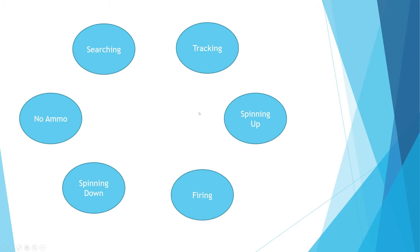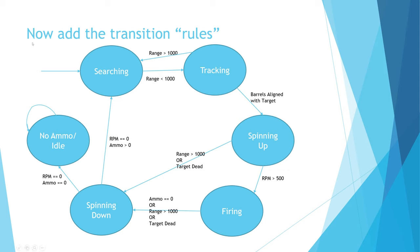We're going to write those down, put them in circles. It doesn't matter the order, but I've done them in the order of how the gun might operate: searching, tracking, spinning up, firing, spinning down, and out of ammo. So we have our states drawn up in circles. The next step is to think about the transitions. When the gun comes into existence in the game, this entry arrow means it begins life in the searching state.